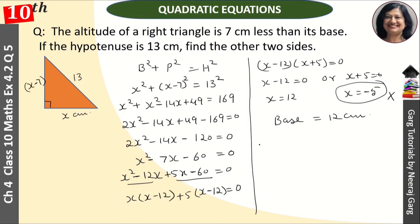And the altitude, what will be? That is our x minus 7, right? So this is equal to 12 minus 7, which means 5 centimeters. This is our answer.